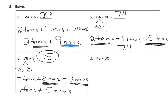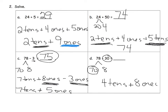The last example on this page: seventy-eight can be thought of as seven tens and eight ones, and we're going to take away thirty, which is three tens. Seven tens take away three tens gives us four tens, plus eight ones, so that gives us the answer of forty-eight.